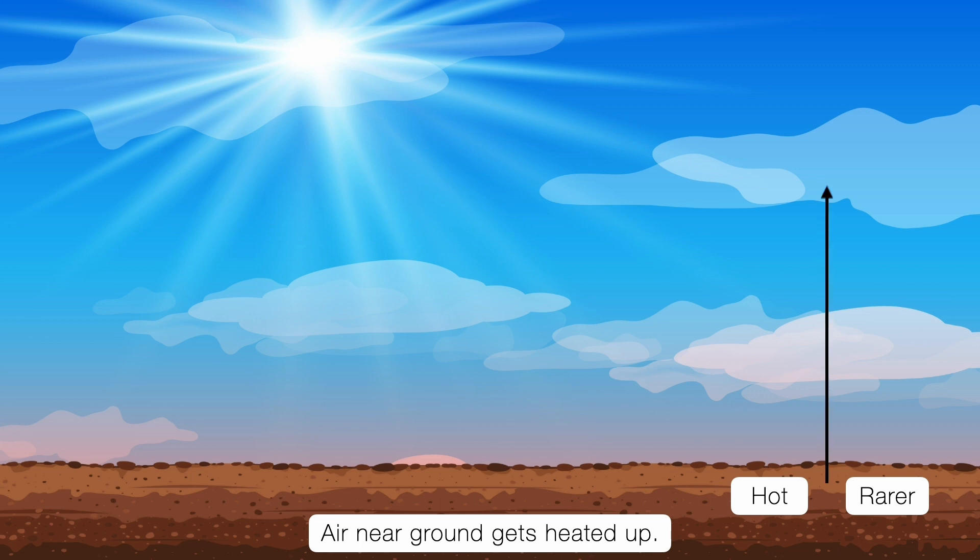So basically, if we move upward from the road surface, the air is layered in a continuous layer. Next to the ground: hot, thin, rarer air. Higher up: cooler, denser air. And here is the key point: the refractive index also increases with density. Refractive index at the top layer is higher compared to the refractive index at the bottom layers.